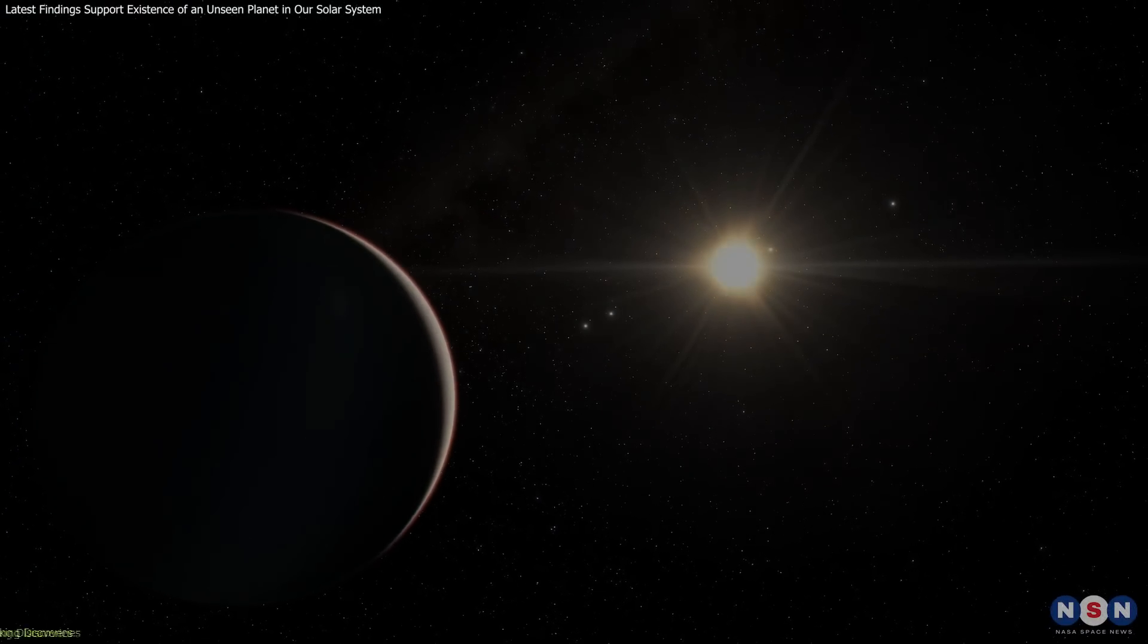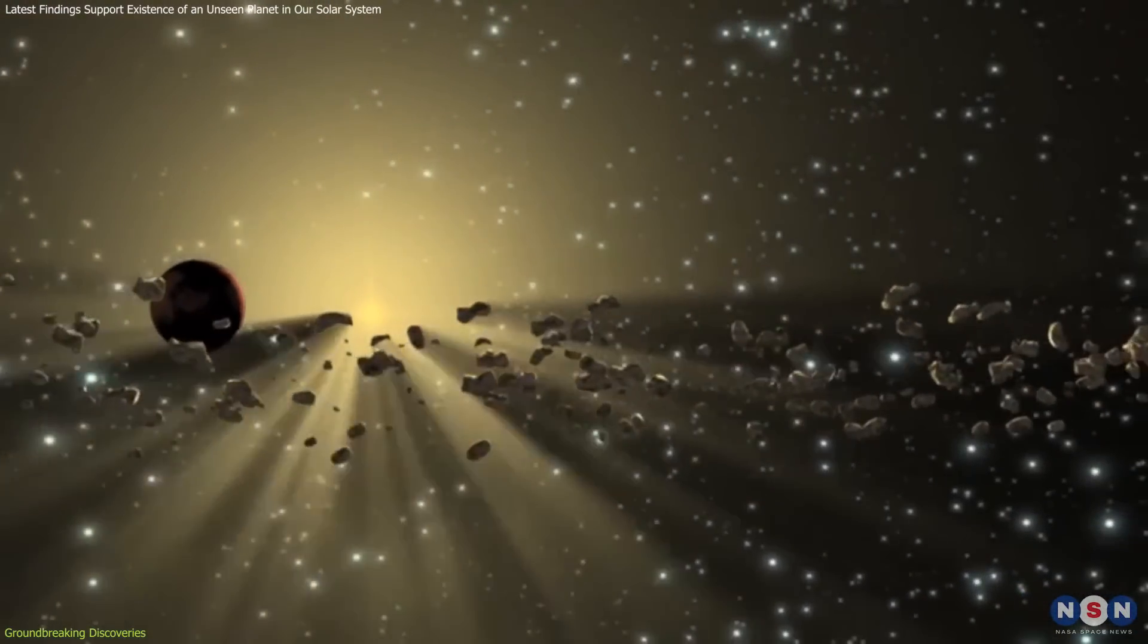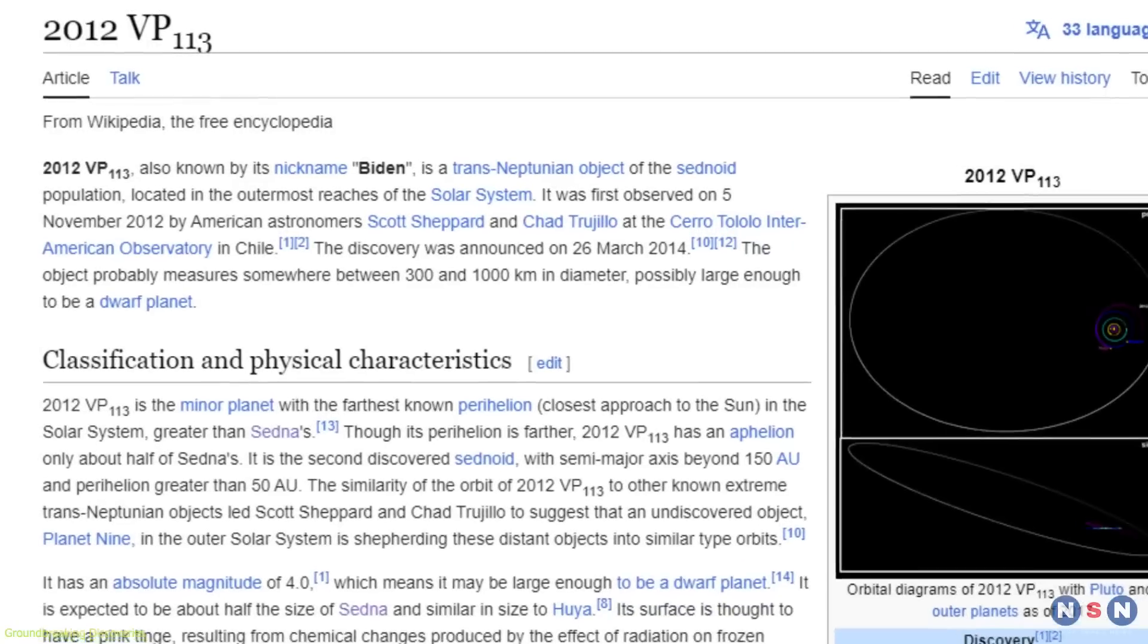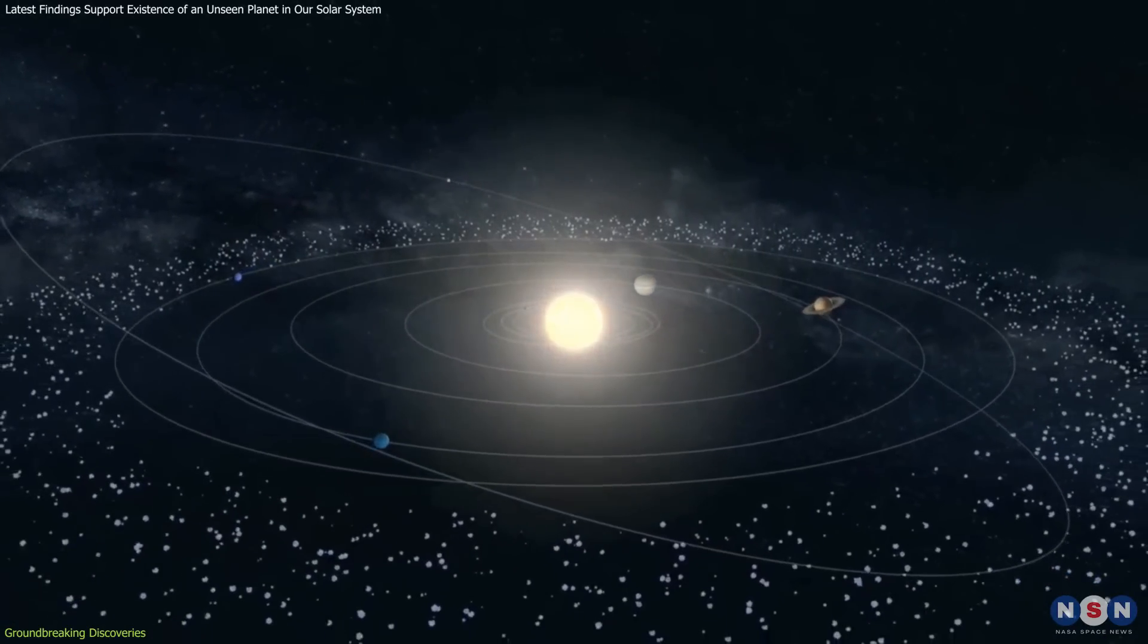The search for Planet 9 began with anomalies in the orbits of trans-Neptunian objects like CEDNA and 2012 VP113. These objects, located beyond Neptune,